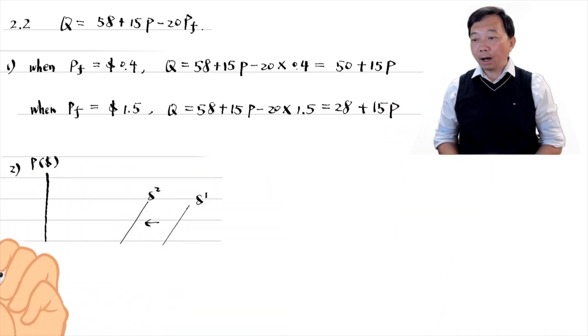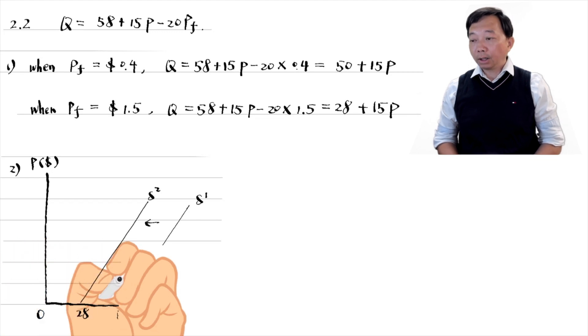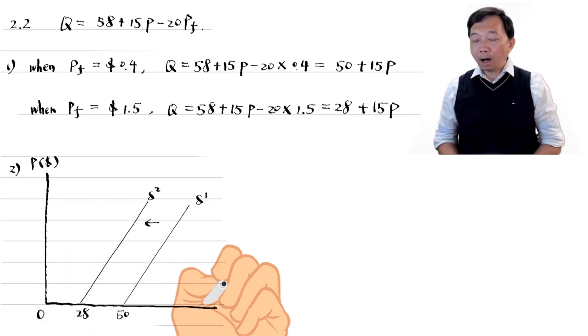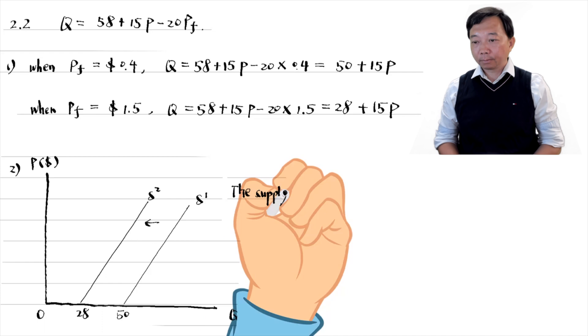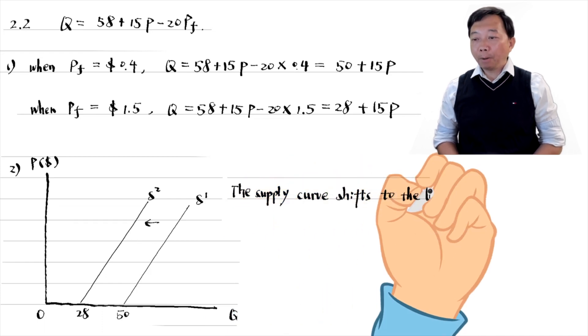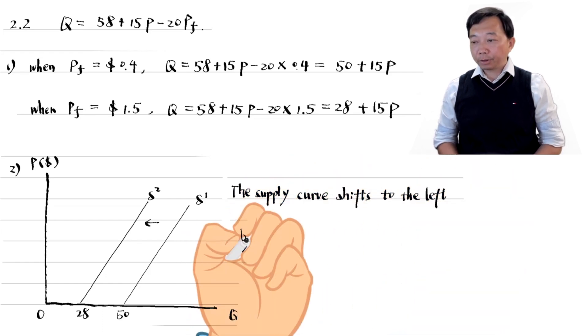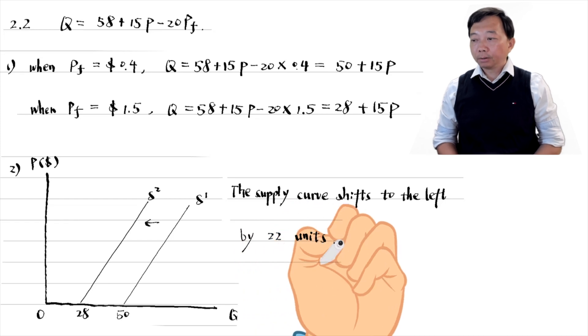The supply functions are linear, so the corresponding supply curves are straight lines. The slopes are positive, so the supply curves slope upwards. The slopes are the same for the two supply functions, so the increase in the fertilizer price causes a parallel shift to the left.